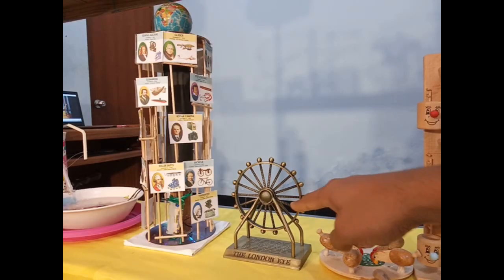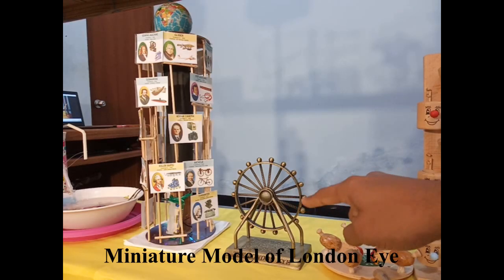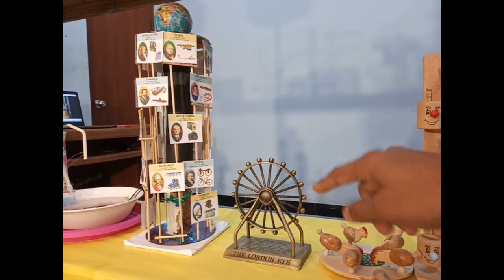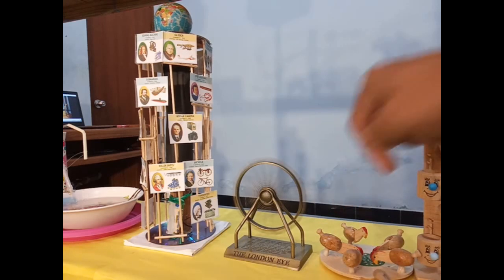Here is a miniature model of London Eye. I use this as a teaching aid to explain centripetal force, angular velocity, etc.